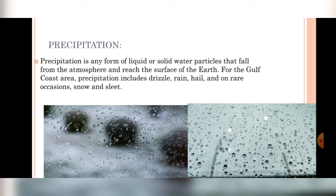For example, precipitation includes rain, varshamu, manchu, rallu, snow, and sleet — these are all things that fall down, that is precipitation.